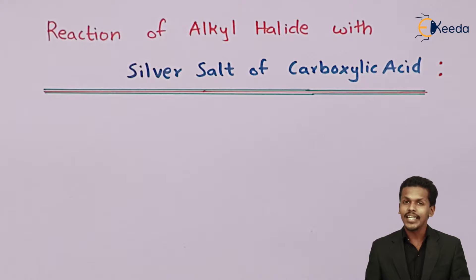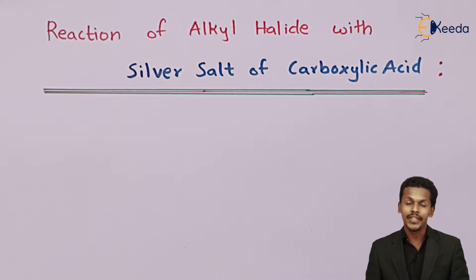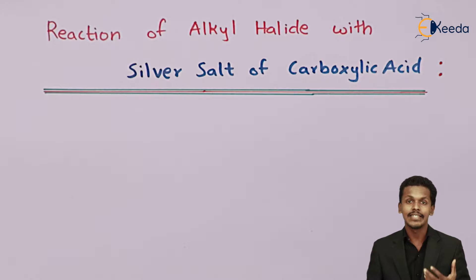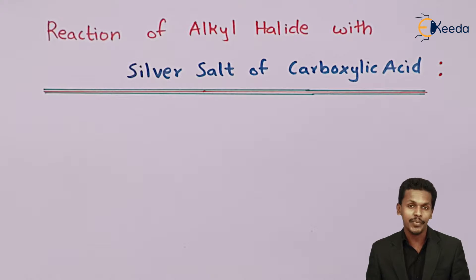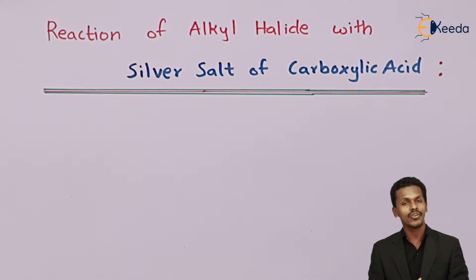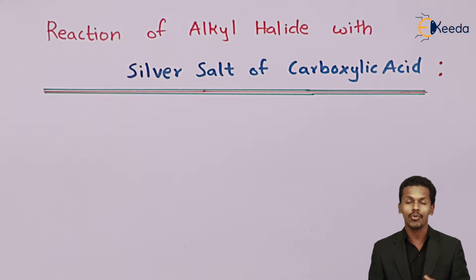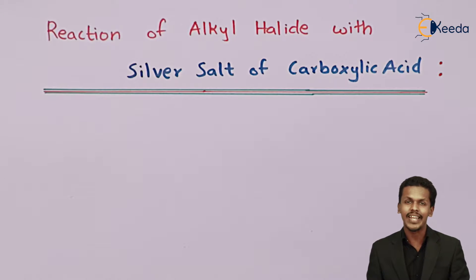It has been found that whenever an alkyl halide is treated with the sodium salt of carboxylic acid, an ester is produced. Let us understand the general reaction first, and then we will look at an example.